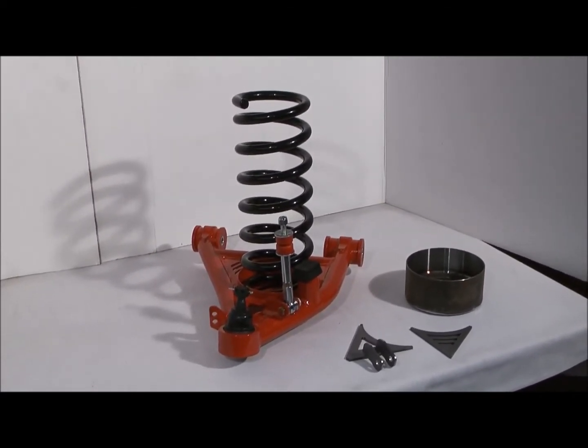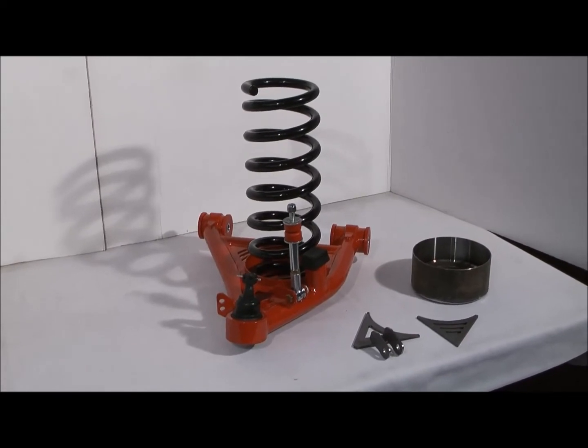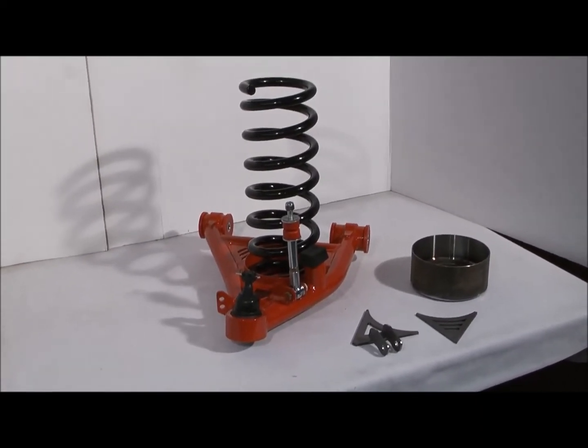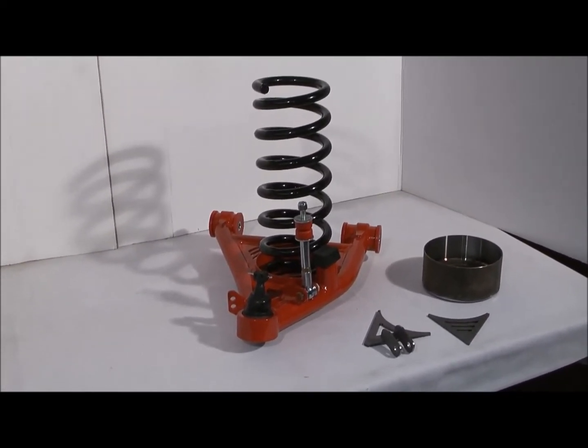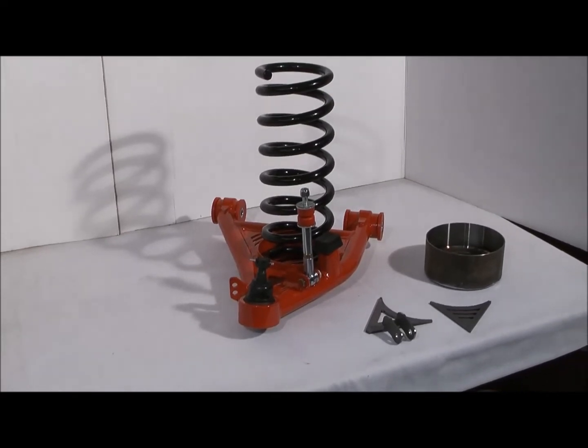As well as the 1982 to 2004 GM S10 and S15 truck and blazer two-wheel drive, the rear-wheel drive models.